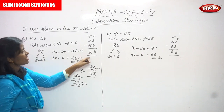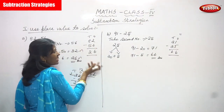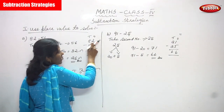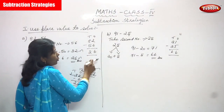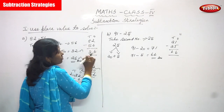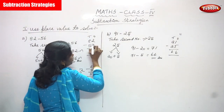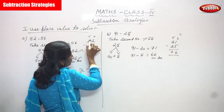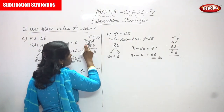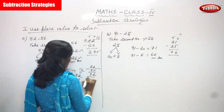Now this is the general subtraction — no strategy. For 82 minus 56: 1's place is 2 and 10's place is 8; second number has 1's place 6 and 10's place 5. Since 2 minus 6 is not enough, borrow from 10's: 8 becomes 7, and 2 becomes 12. So 12 minus 6 gives 6, and 7 minus 5 gives 2. The answer is 26.